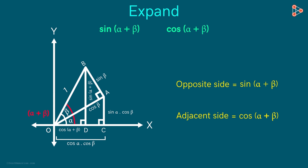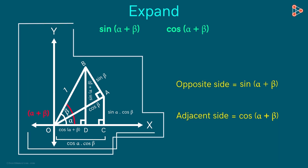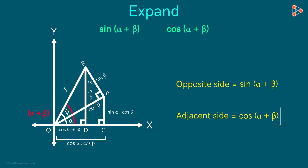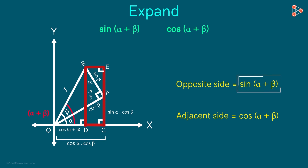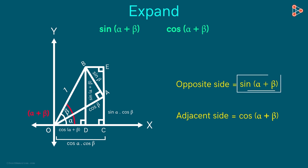All we need to do is find the lengths of the opposite and adjacent sides in simpler terms. We are going to draw two lines — one here and one here. This angle formed here is a right angle, and we get a rectangle as a result. This rectangle will help us find sin alpha plus beta and cos alpha plus beta. We know that the opposite sides of the rectangle are equal, so this side equals this side and this side equals this side.